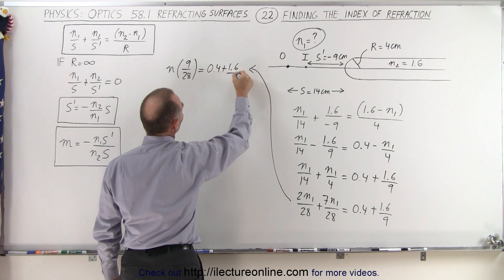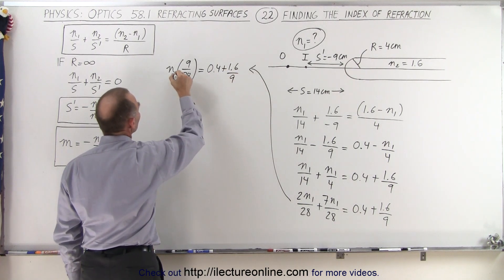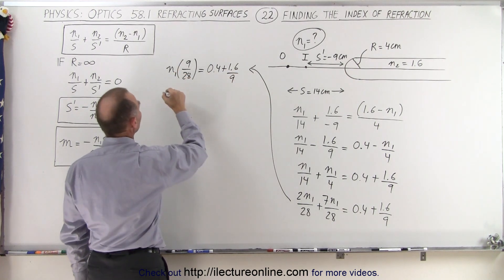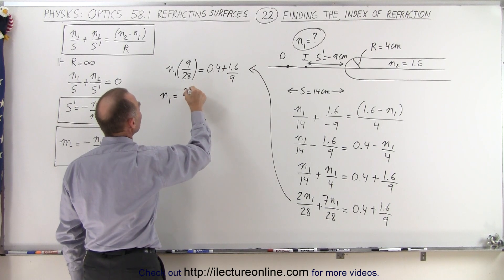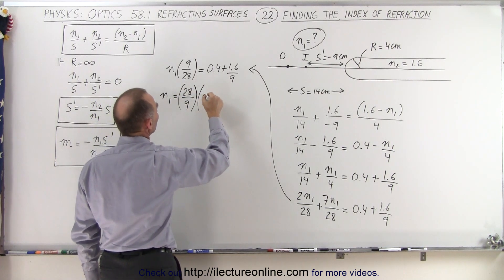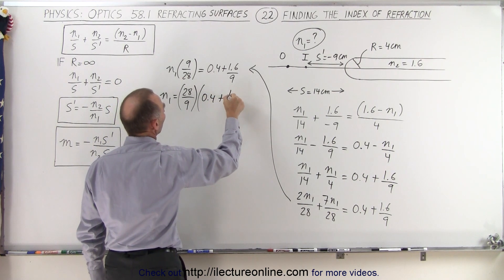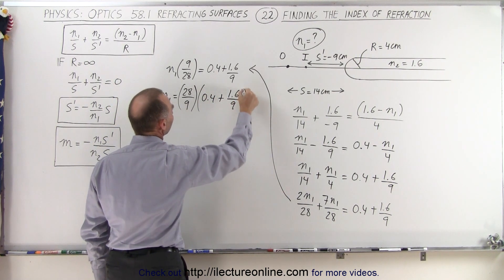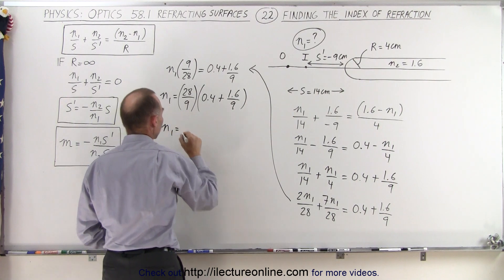And finally, n1 equals 28 over 9 multiplied by the quantity 0.4 plus 1.6 divided by 9. And now let's find out with a calculator what that index of refraction is equal to.